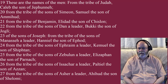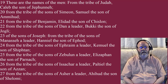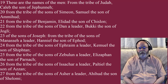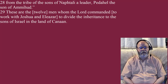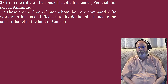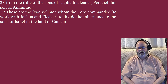From the tribe of the sons of Zebulun, a leader, Elezaphan the son of Parnak. From the tribe of the sons of Issachar, a leader, Haltiel the son of Azan. From the tribe of the sons of Asher, a leader, Ahihud the son of Shalomi. From the tribe of the sons of Naphtali, a leader, Hedahel the son of Amahud. These are the twelve men whom the Lord commanded to work with Joshua and Eleazar to divide the inheritance to the sons of Israel in the land of Canaan.